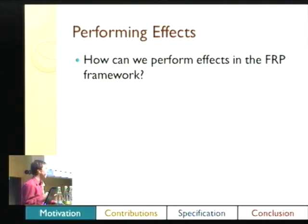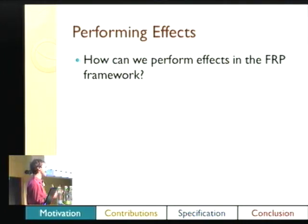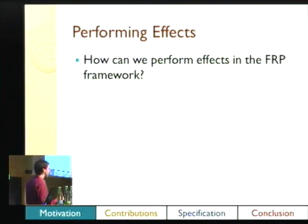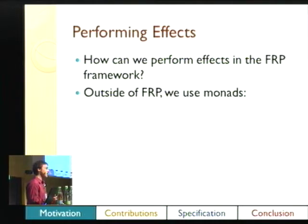The question is how can we perform effects in this model? If it's a pure functional model, how can we put in effects in a safe way? We want to backtrack and ask how we do effects in Haskell in general — outside of FRP, we use monads.